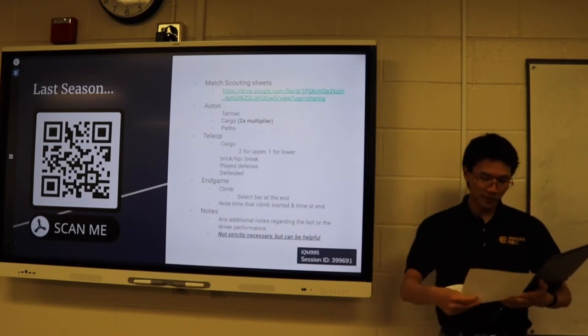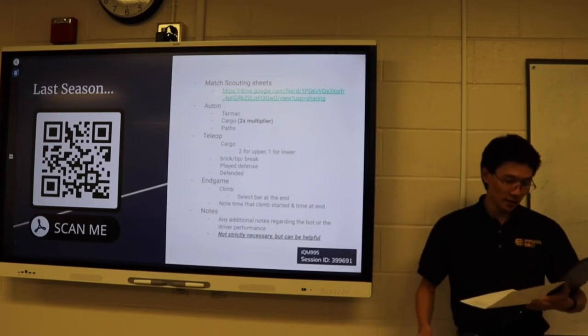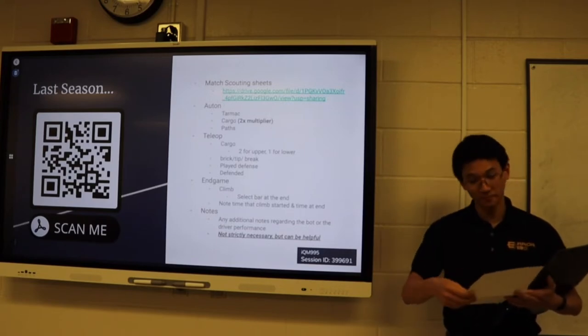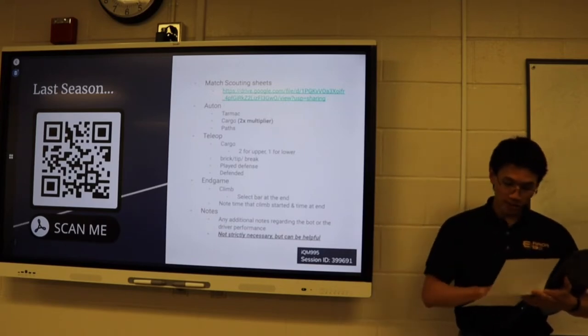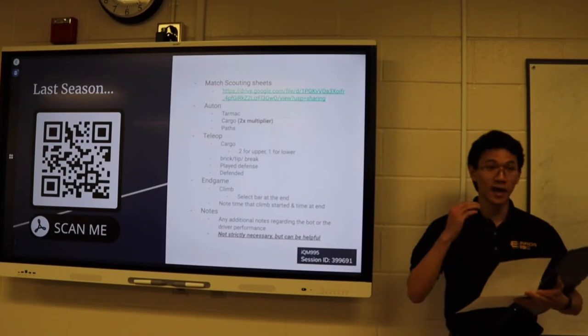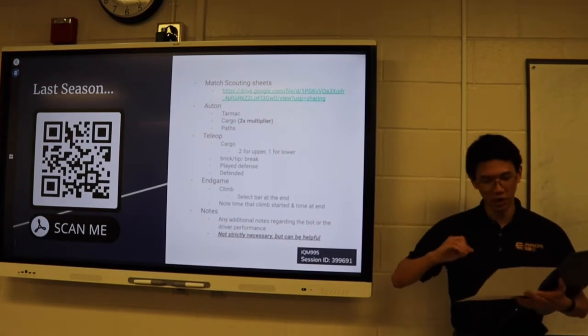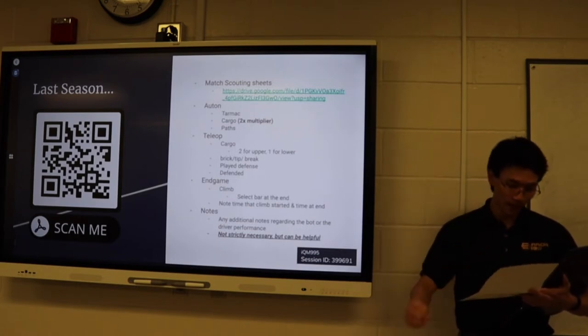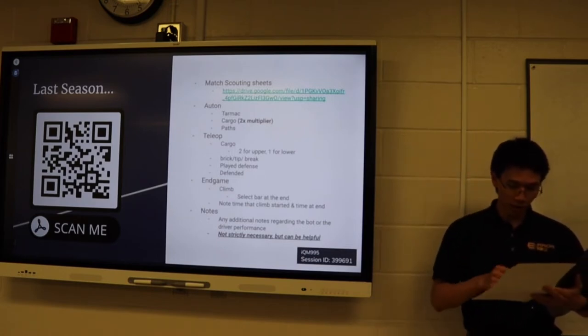Then we have the endgame climb. We have low, mid, high, traversal, and attempted. So you just select which one is the highest that it reached. If it didn't attempt, just hit no. If it fell, just say yes, it attempted, but it fell. And also make sure to note the start and end times.